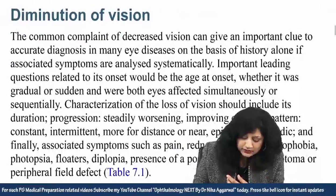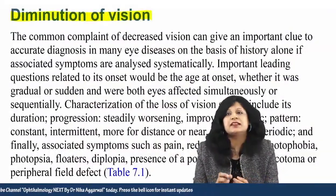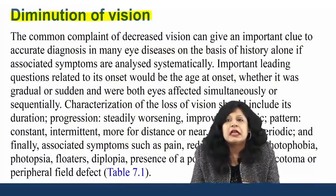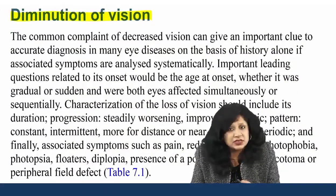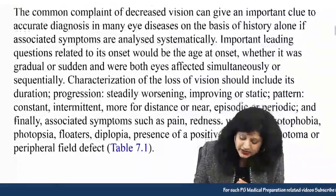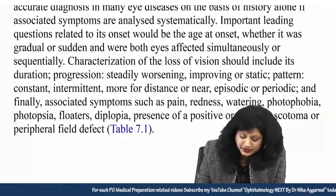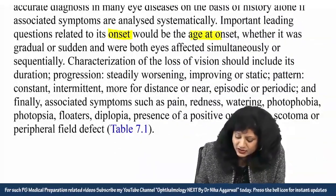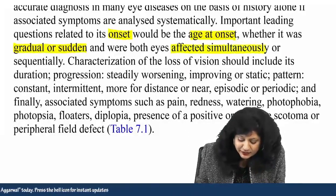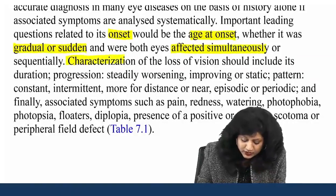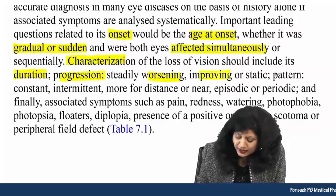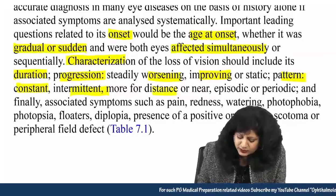Another important thing is diminution of vision. Diminution of vision is the most universal complaint of patients coming to the ophthalmology OPD and is most widely discussed. The commoner complaint of decreased vision gives an important clue to accurate diagnosis. Important leading questions related to its onset include: age at onset, whether it was gradual or sudden, both eyes simultaneously affected or not, characterization of the loss, its duration, progression (worsening or improving), pattern (constant or intermittent), and whether it is more for distance or near.